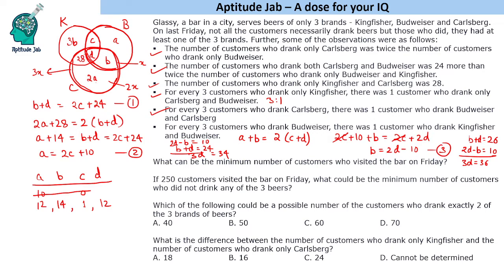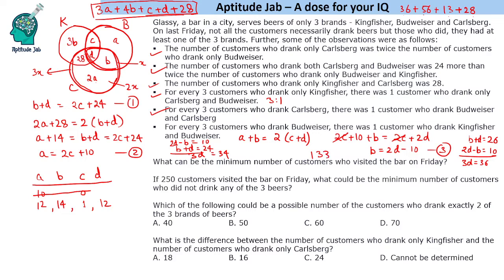The first question asks: what is the minimum number of customers who visited the bar? The total is 3A + 4B + C + D + 28. Using minimum values C = 1, A = 12, B = 14, D = 12: 3×12 = 36, 4×14 = 56, C + D = 13, plus 28 gives 36 + 56 + 13 + 28 = 133. So the minimum number of customers is 133.